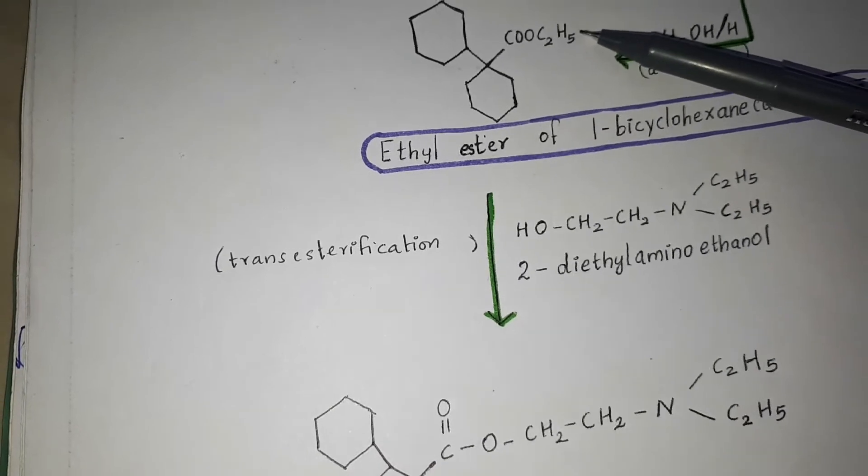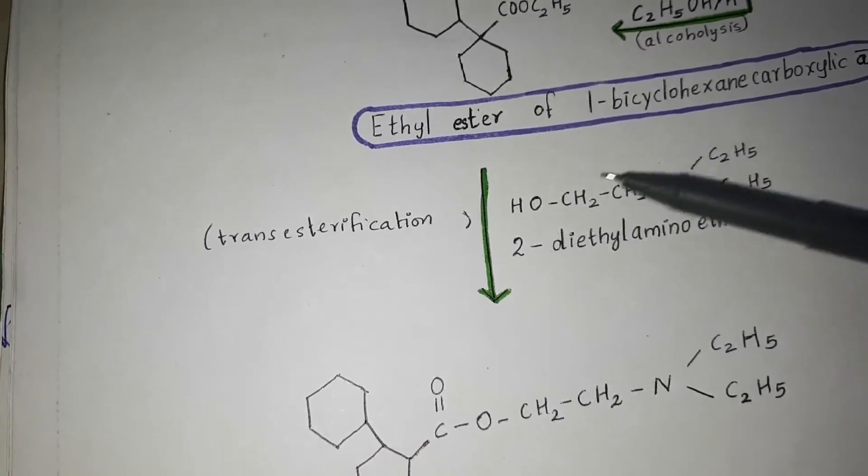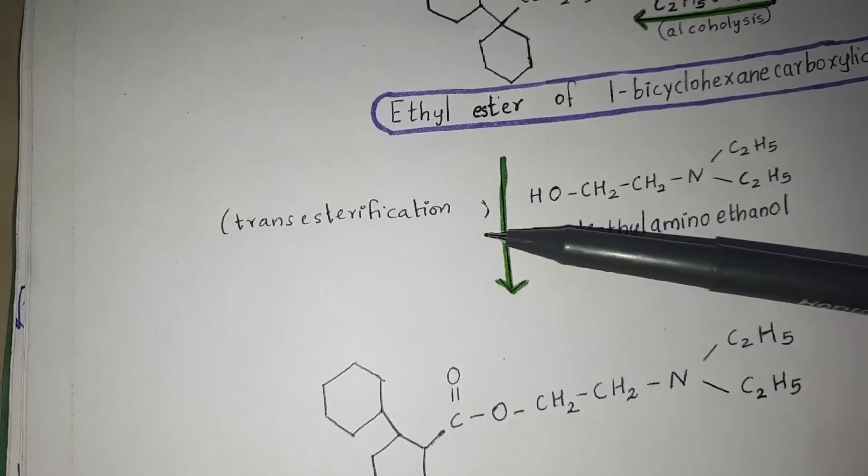Hence this is removed and in the place of that this whole thing comes here. That is called transesterification, and finally we get dicyclomine.